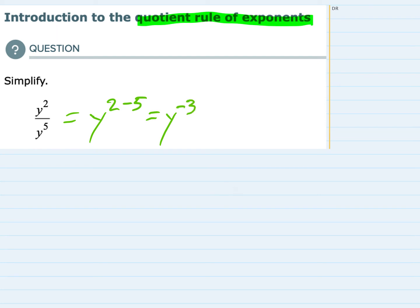But we usually won't leave a solution with a negative exponent, so I'm going to rewrite this to get rid of the negative exponent. This is the same as 1 over y to the positive third.